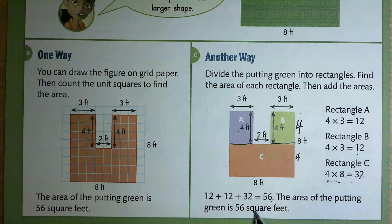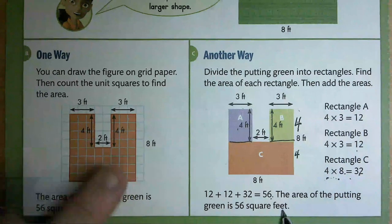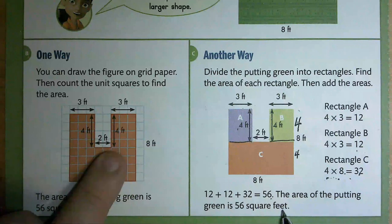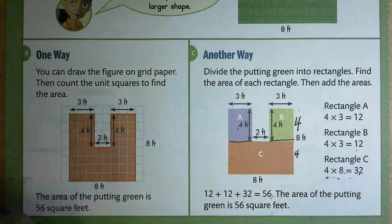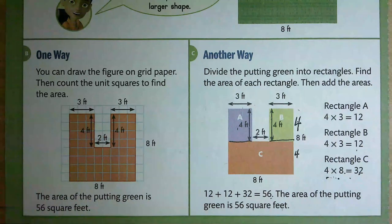We can add these together: 12 plus 12 is 24, and 24 plus 32 equals 56 square feet. They did not forget square feet because these are all one-foot squares, which is why we use square feet.